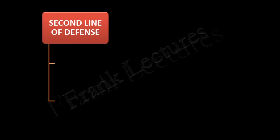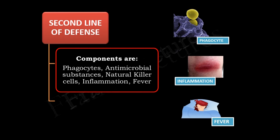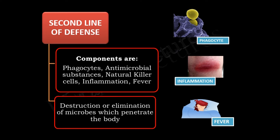When the first line of defense fails and microbes gain entry into the body, the second line of defense comes into play. The main components of the second line of defense are phagocytes, antimicrobial substances, natural killer cells, inflammation, and fever. Their function is the destruction or elimination of microbes which penetrate the body.